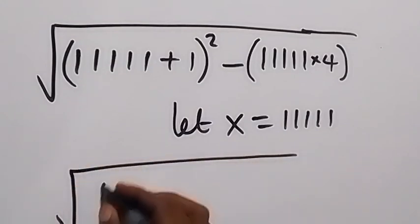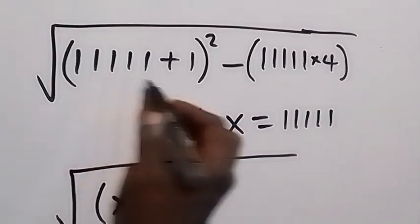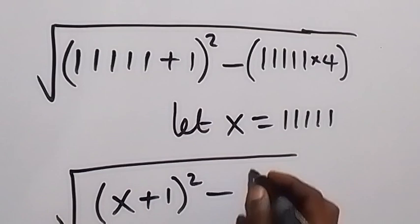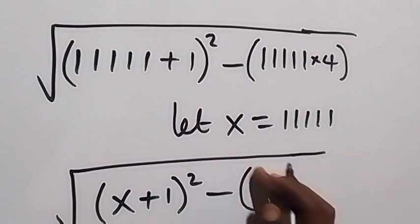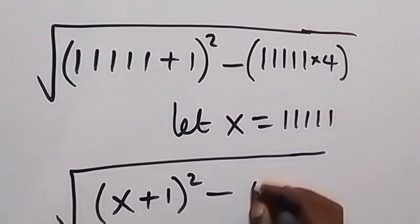And this will be square root of, in brackets, x plus 1 squared. So this is x, now x plus 1 squared, minus, we have minus everything here, that's x times 4, that's 4x.